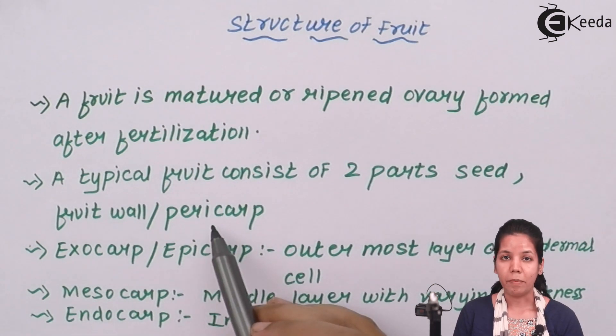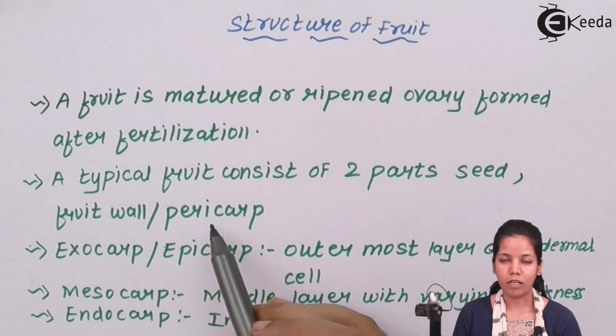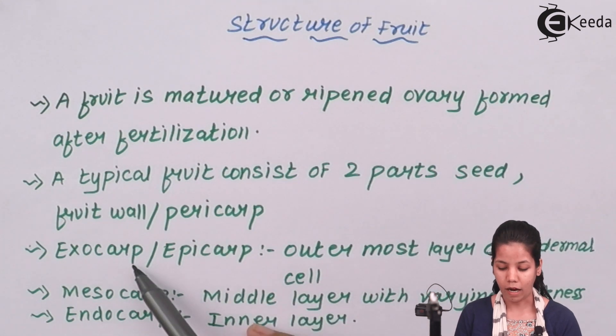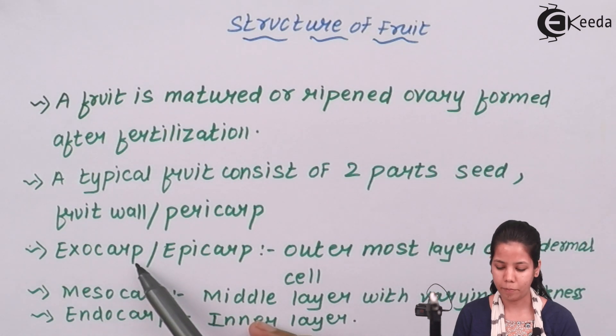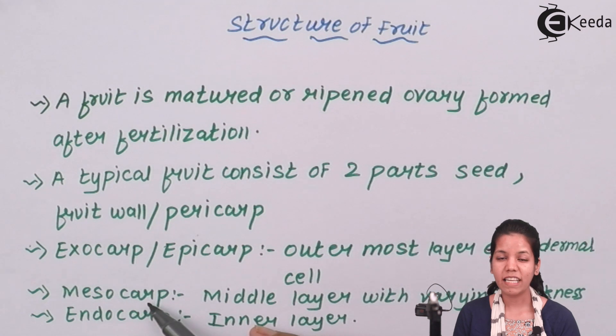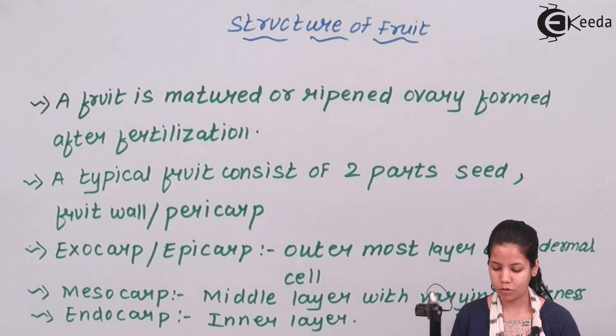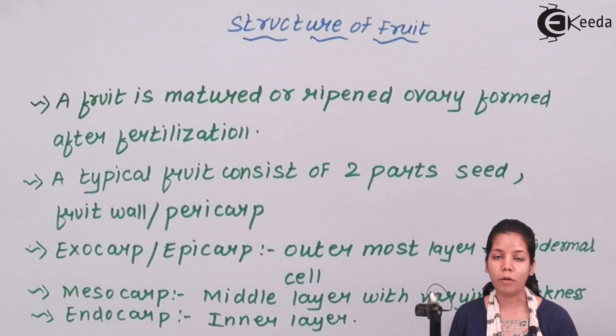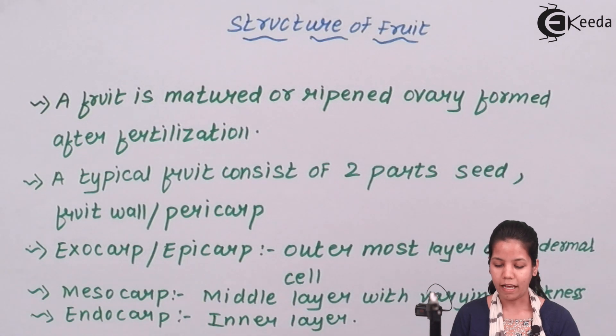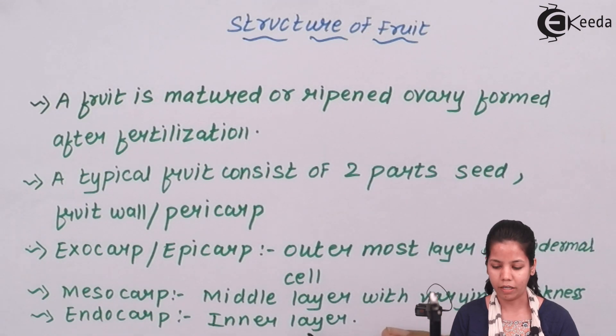The pericarp is divided into three parts. The outer covering is called the exocarp or epicarp. The middle layer is the mesocarp, which has varying thickness. In mango, the mesocarp is thicker because it's the fleshy part we consume. The last part is the endocarp, the inner layer beside which the seed is situated.